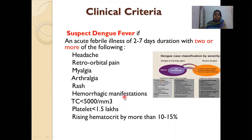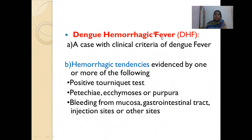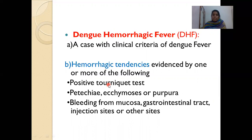There is something called dengue hemorrhagic fever, where there is clinical criteria of dengue fever plus hemorrhagic manifestations as evidenced by a positive tourniquet test. When you inflate the cuff between systolic and diastolic BP and keep it for 5 minutes, you count the number of petechiae developed in one square inch below the elbow. If there are more than 10, it is taken as a positive tourniquet test — seen in more than 50% of cases. There can also be petechiae, purpura, or bleeding from mucosa, GI tract, injection sites, or other sites.